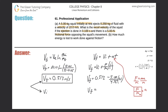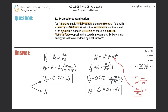Plugging into the calculator: 0.513 minus 5 divided by 4.75 times 0.1 gives us approximately 0.408 meters per second. That is the final velocity of the squid. Thank you very much — please remember to subscribe, and I'll see you in the last question of this chapter. Take care!